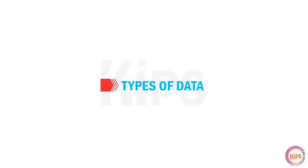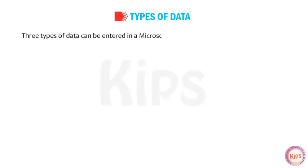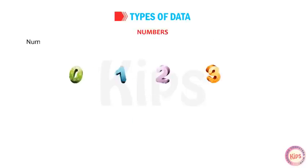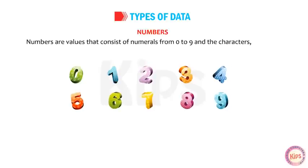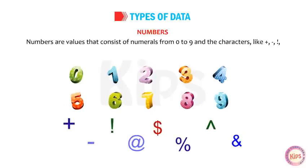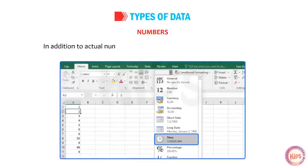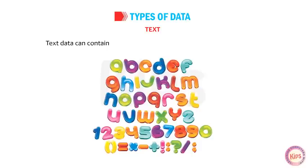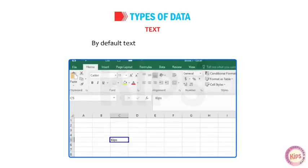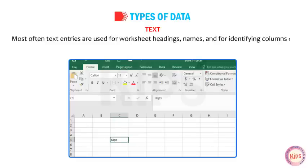Let us talk about various types of data. Three types of data can be entered in a Microsoft Excel worksheet: numbers, text, and formulae. Numbers consist of numerals from 0 to 9 and characters like plus, minus, dollar, percentage, caret, etc. They can be used in calculations. Excel also stores date and time as numbers. By default, numbers are right-aligned in a cell. Text data can contain alphabets, numbers, spaces and special characters, but is not used in calculation. By default, text is left-aligned. Text entries are often used for worksheet headings, names and column identifiers.